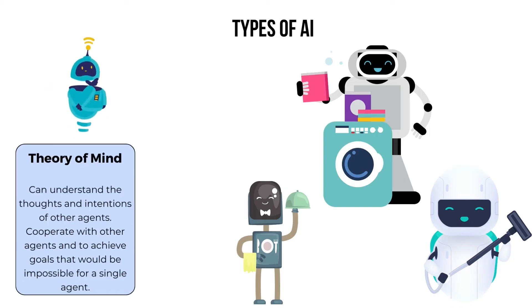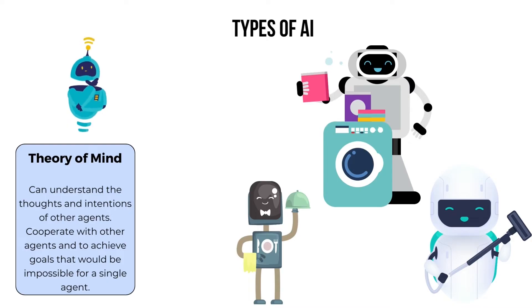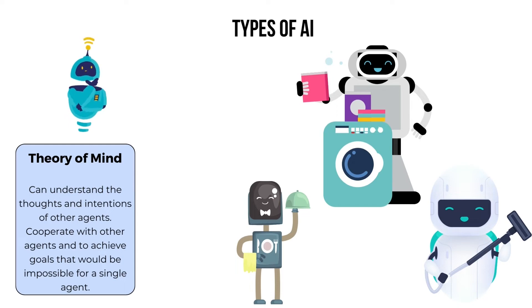One way that theory of mind AI could revolutionize the way we interact with machines is by creating robots that are able to provide companionship and support to people who are lonely or isolated.